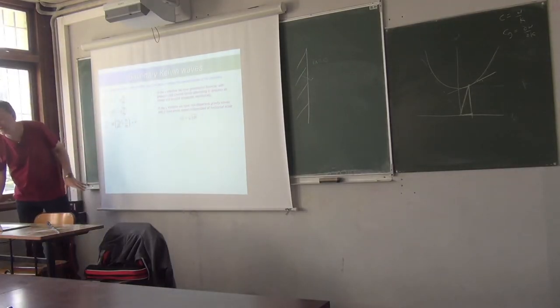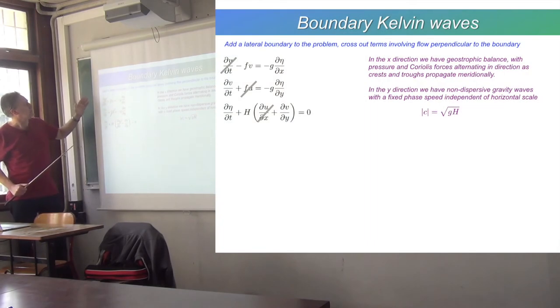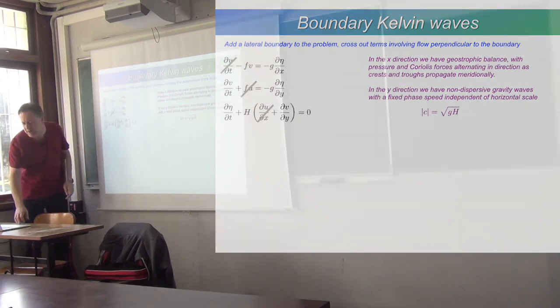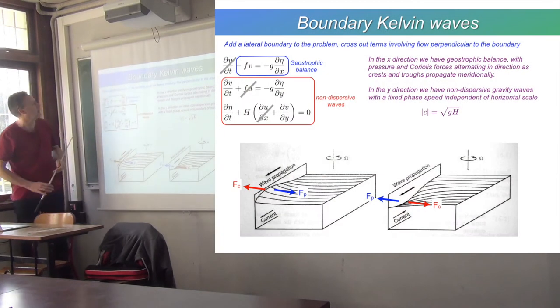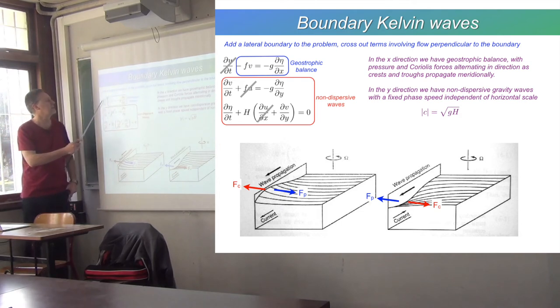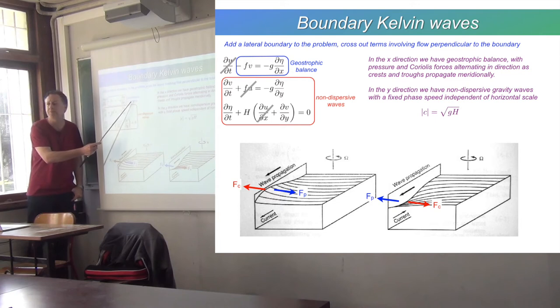Well, if we've crossed out this du/dt term in the x momentum equation and the Coriolis force fu in the y momentum equation, and simplified the divergence in the continuity equation, what we've got left in the x momentum equation is just geostrophic balance. We've got a balance between the Coriolis force and the pressure gradient force.